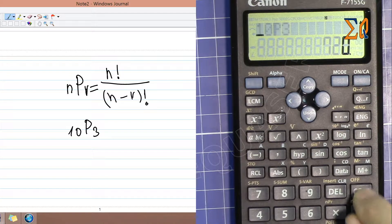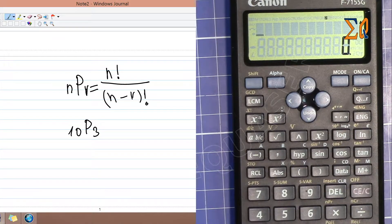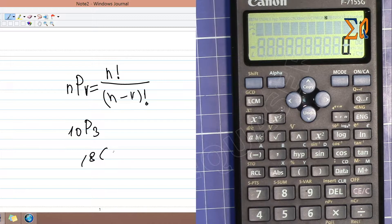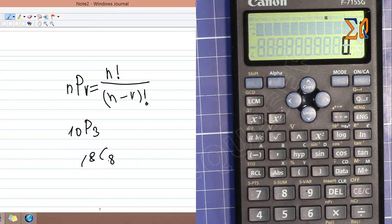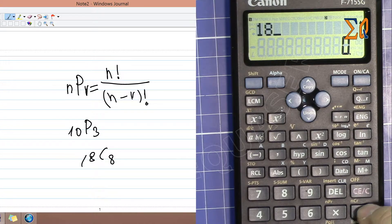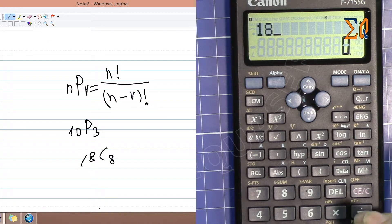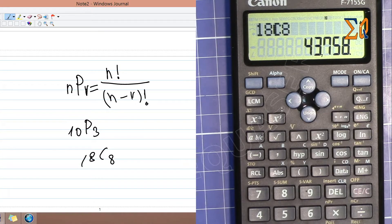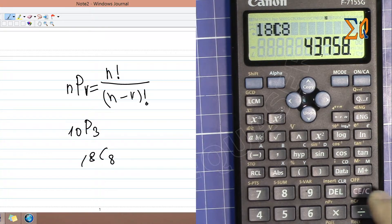For combination, same thing. Let's say you want to do 18C8. Press 18, then shift, and this time you press the C button, then 8. This is the combination.